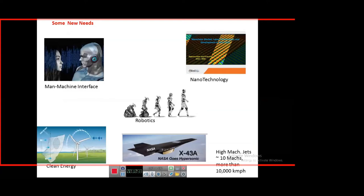Times have changed. The demands from society now include robotics, clean and sustainable energy, very high-speed aircraft — of the order of 10 times the speed of sound — man-machine interfaces, and nanotechnology. These have shifted the focus from classical sciences. Present-day mechanical engineering is at the apex of a multidisciplinary approach, sharing knowledge with many other groups to find solutions to challenging problems in society.